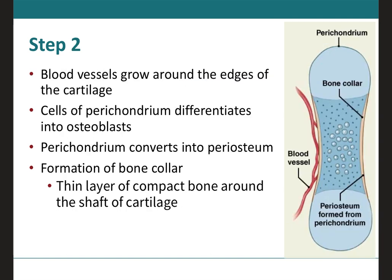In step two, the cells forming the perichondrium — the membrane surrounding the hyaline cartilage model — differentiate into osteoblasts. Once they differentiate into osteoblasts, the perichondrium is now called the periosteum. These osteoblasts begin to deposit bone around the diaphysis, forming a bone collar — the initial thin compact bone around the shaft of the cartilage. This bone collar is only located at the diaphysis, not at the extremities of the cartilage model.